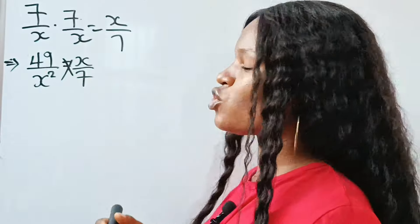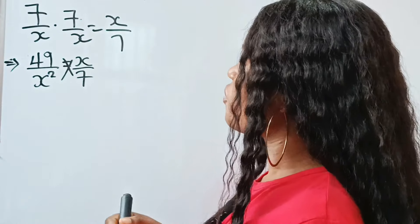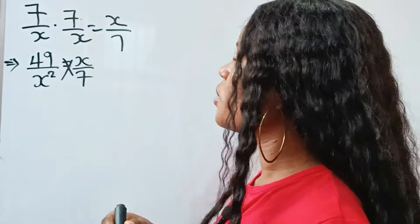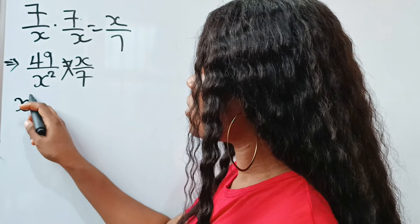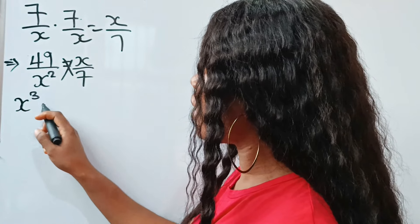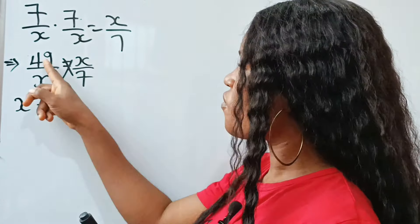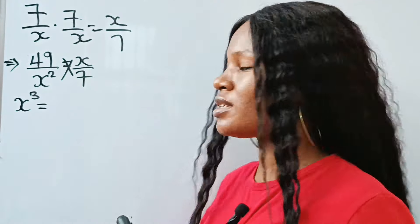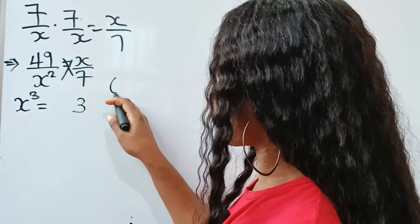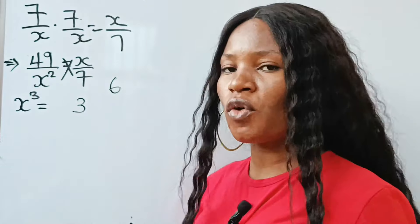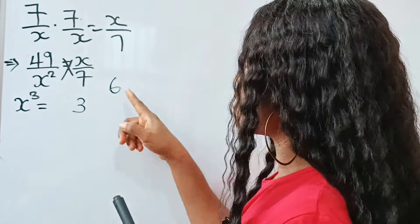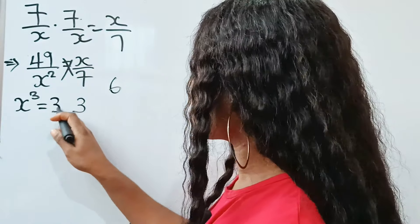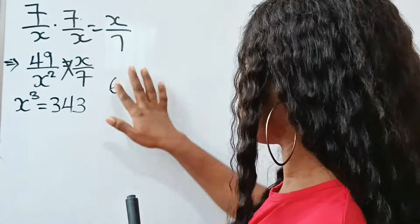What we are going to do is cross multiply. If we do that, x to the power of 2 times x gives us x to the power of 3, which is equal to 49 times 7. Seven times 9 gives us 63, so we write 3 and carry 6. Seven times 4 is 28, and 28 plus 6 is 34, so we have 343.